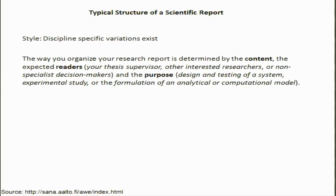Let us look into a typical structure of a scientific report. First, you should understand that there are discipline-specific variations in the way you write a scientific report. In biology, for example, you infer from experiments — especially in molecular biology where you cannot really see what is happening. In developmental biology you see what is happening but not why. In human genetics you look at deformities, examine the family, and determine whether a trait is recessive or dominant. So in biology you often have indirect evidence, and there are discipline-specific variations you need to know.